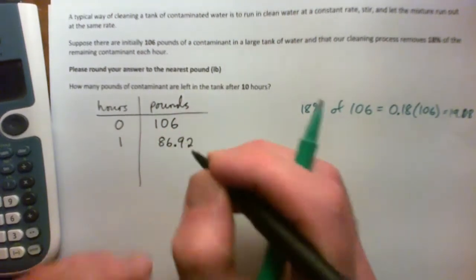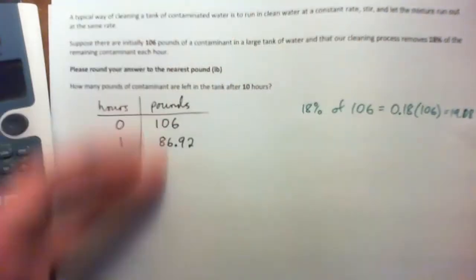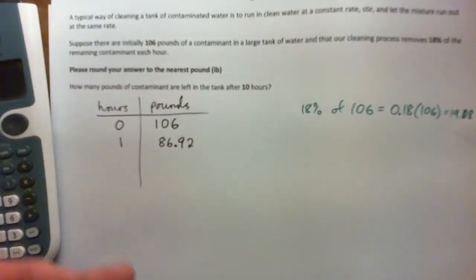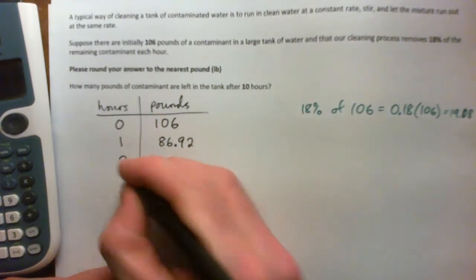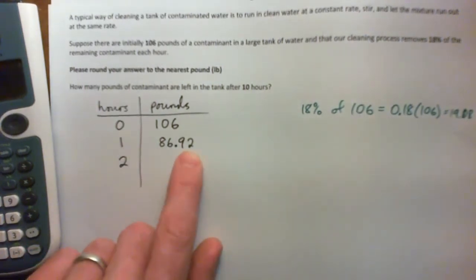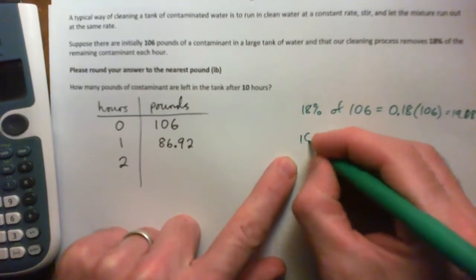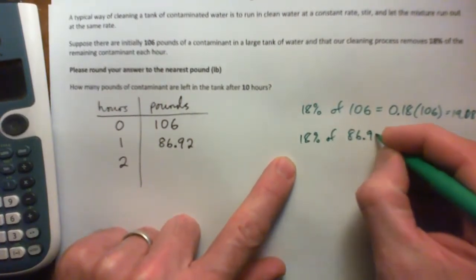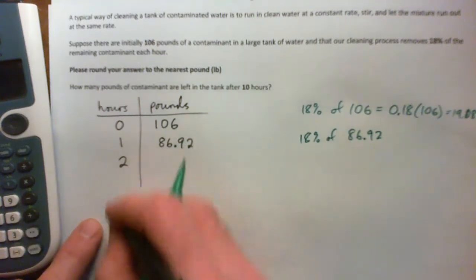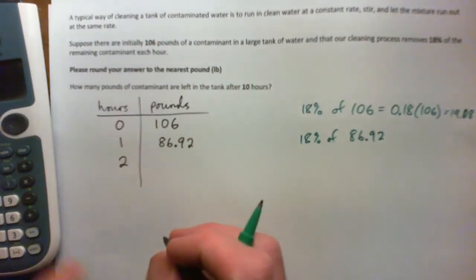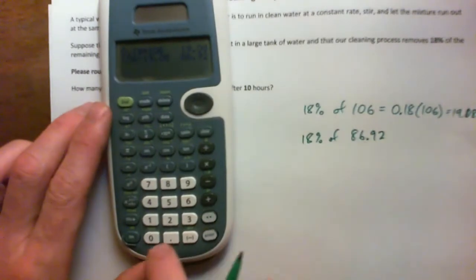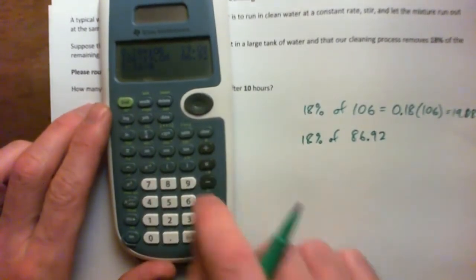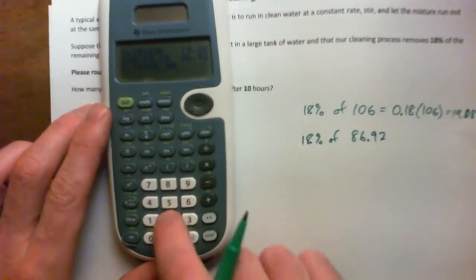There's a cooler way of getting the amount remaining though. After two hours now we have to get 18% of that. So I guess we can do 18% of 86.92, and by the way we have to end up getting how much is left after 10 hours. But 18% of that, 0.18 times 86.92, is 15.6456.